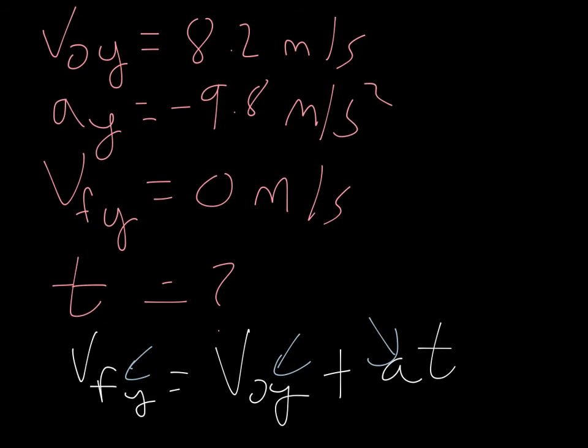So let's do that really fast. I have my v final, which is zero, equals my v initial, 8.2, plus my negative 9.8 gravity times time.